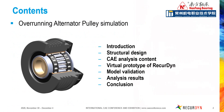The main contents are as follows: the background of the Overrunning Alternator Pulley, including the technical principles and structure; the CAE analysis items for the whole project; the RecurDyn virtual prototype; model validation; RecurDyn simulation results; and conclusion.